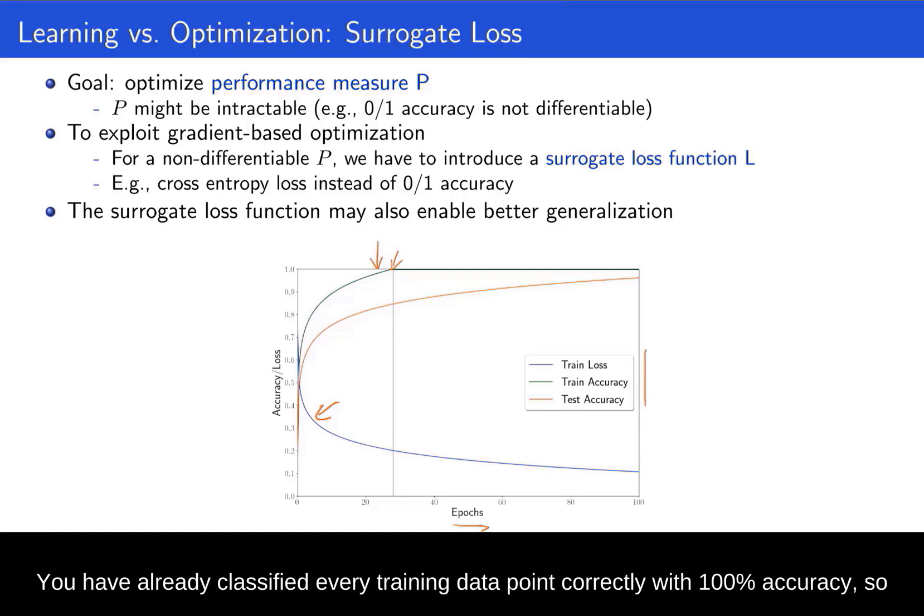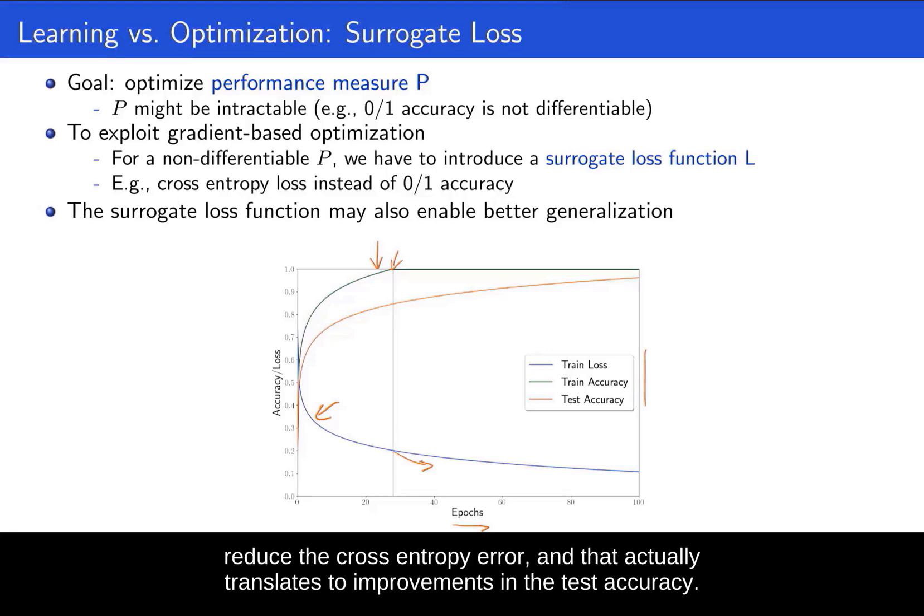And so you couldn't actually get any more training signal from that. You have already classified every training data point correctly with 100% accuracy. So we couldn't move anymore.